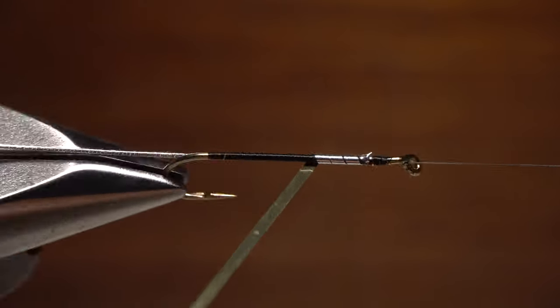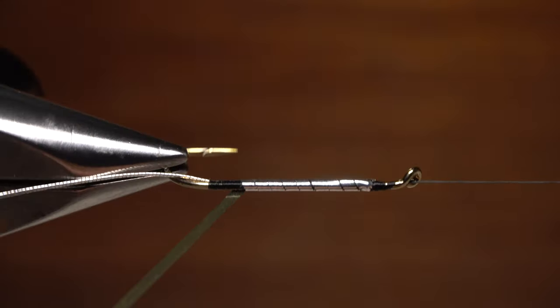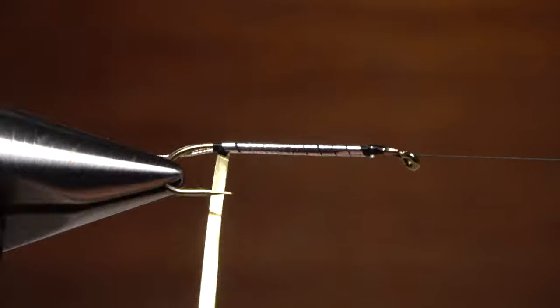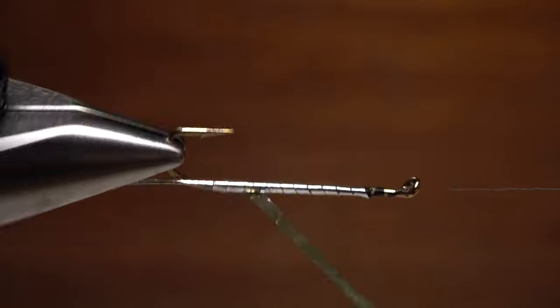Start rotating your vise to continue taking touching wraps with the tinsel rearward down the hook shank. Make sure to cover up all the thread wraps at the hook bend, then change the angle of the Mylar to start wrapping forward.